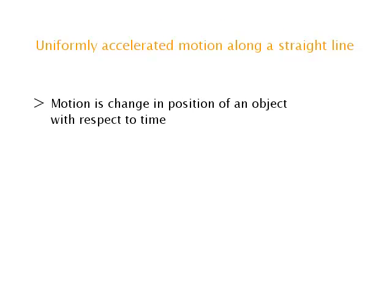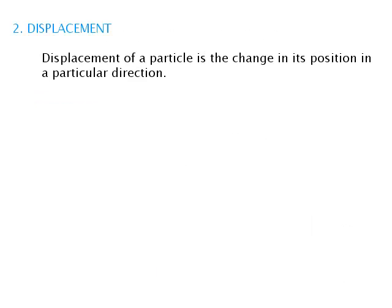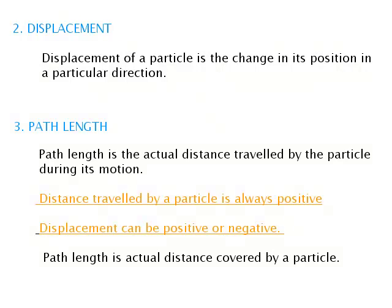Uniformly accelerated motion along a straight line. Motion is change in position of an object with respect to time. The position of a point object at a given instant of time is a point in space at which the object exists at that instant. Displacement of a particle is the change in its position in a particular direction. Path Length is the actual distance travelled by the particle during its motion. The distance travelled by a particle is always positive, while displacement can be positive or negative.